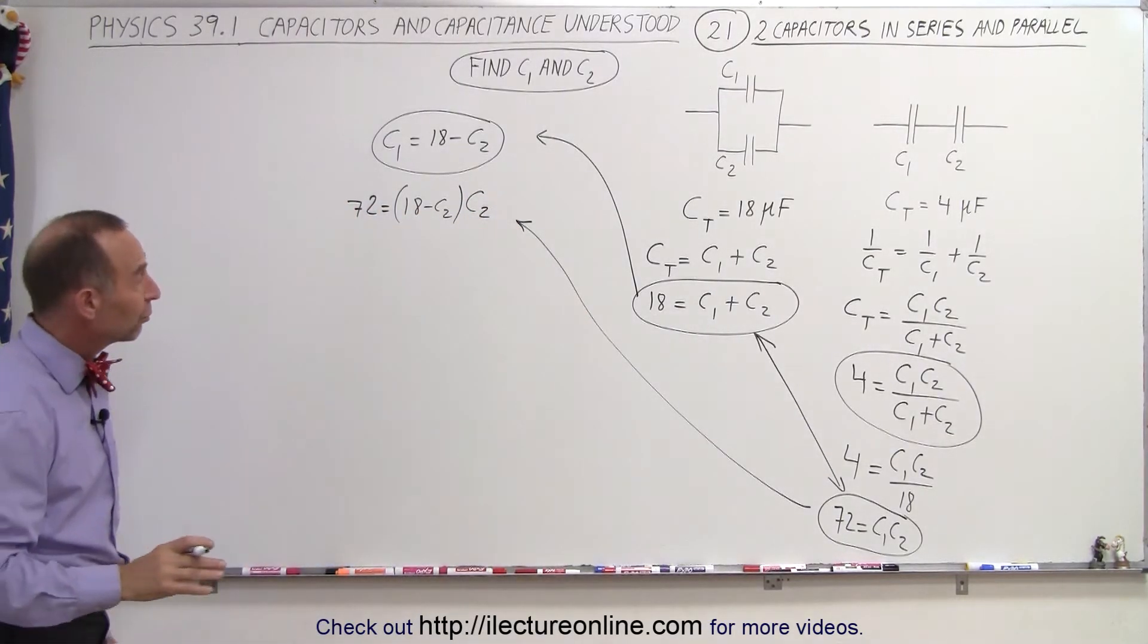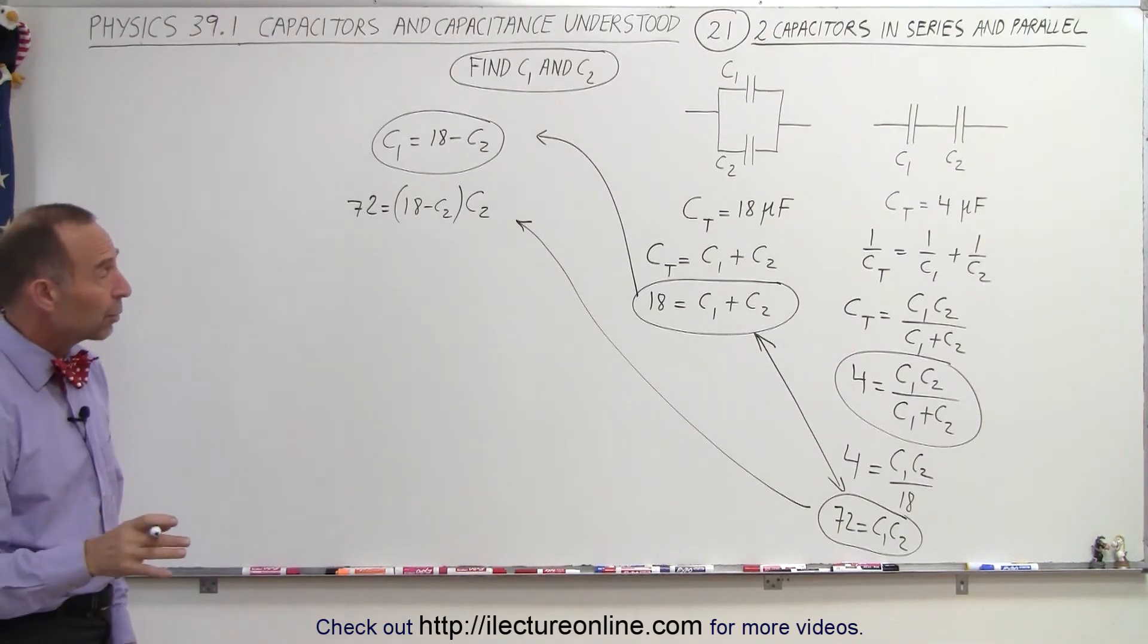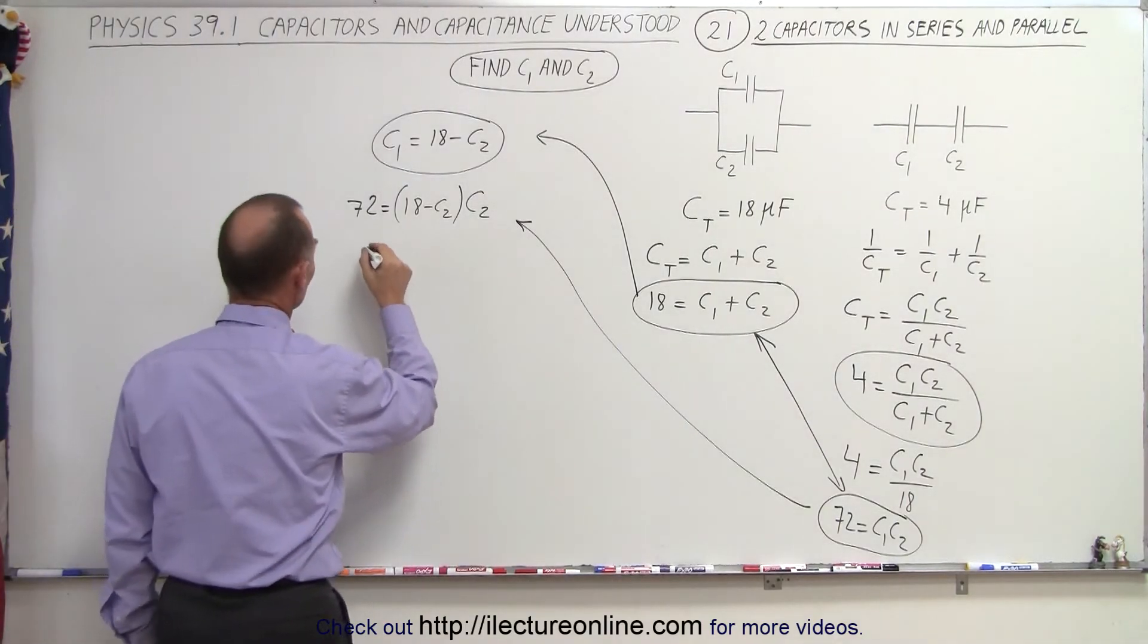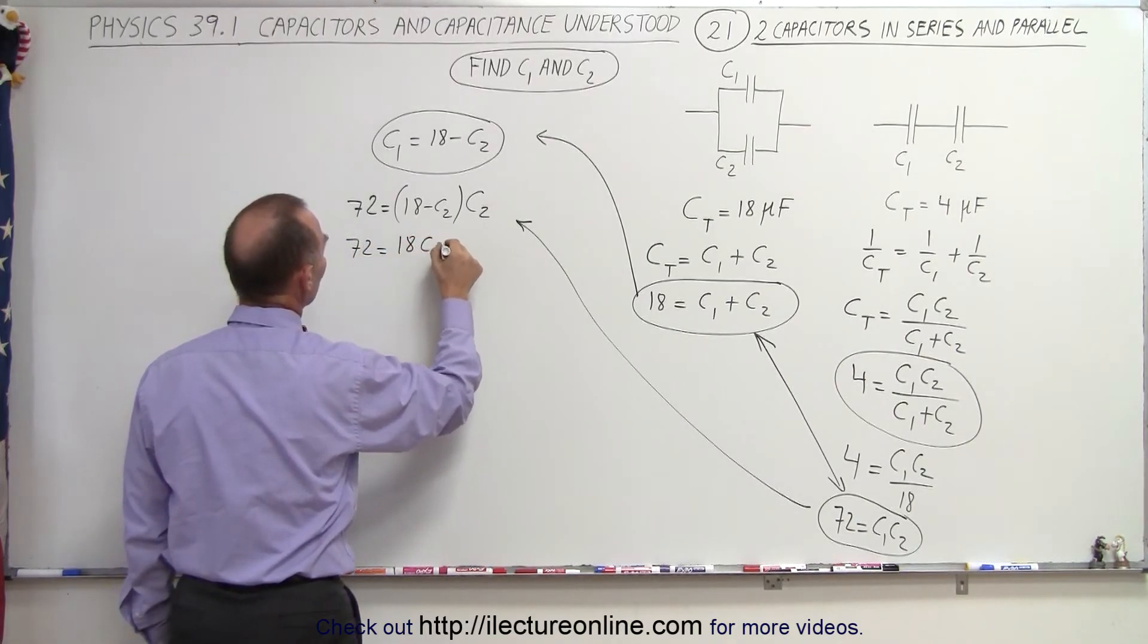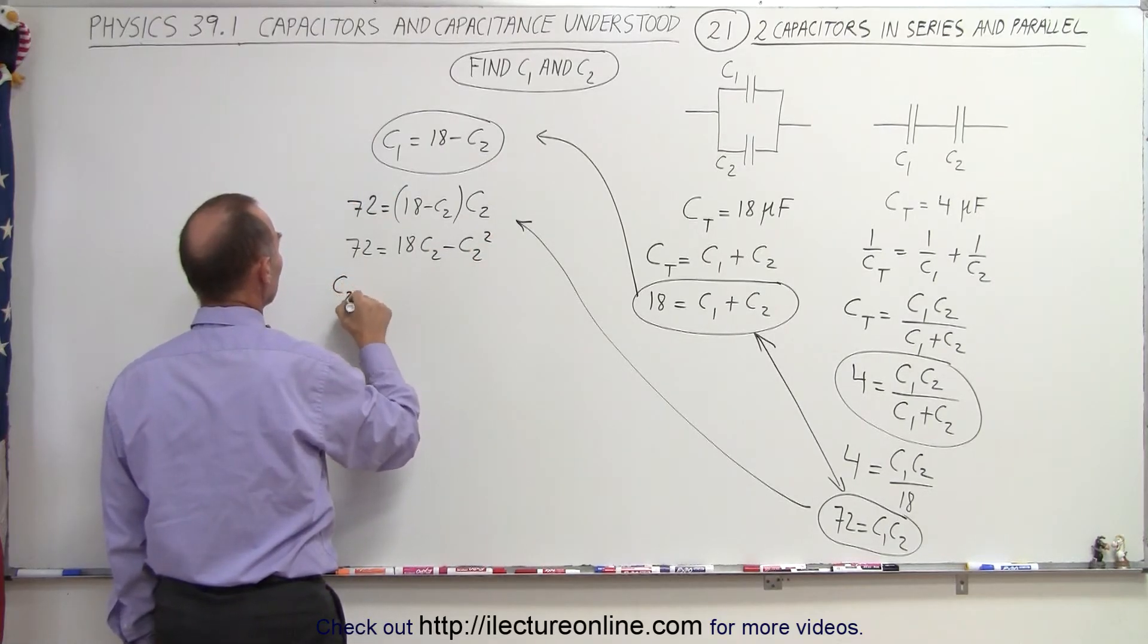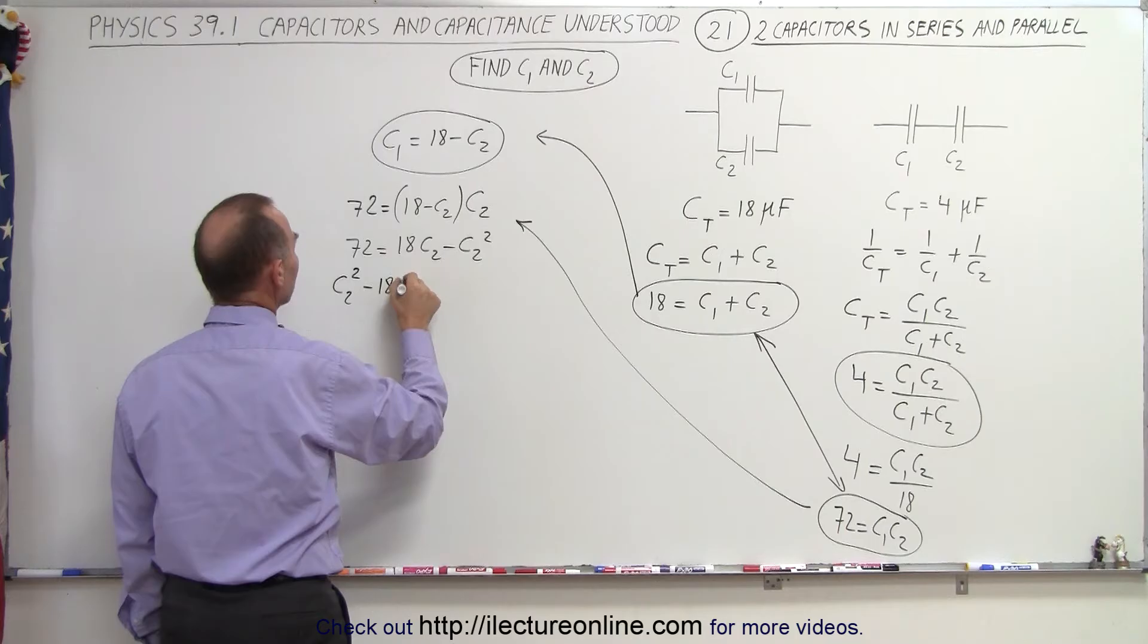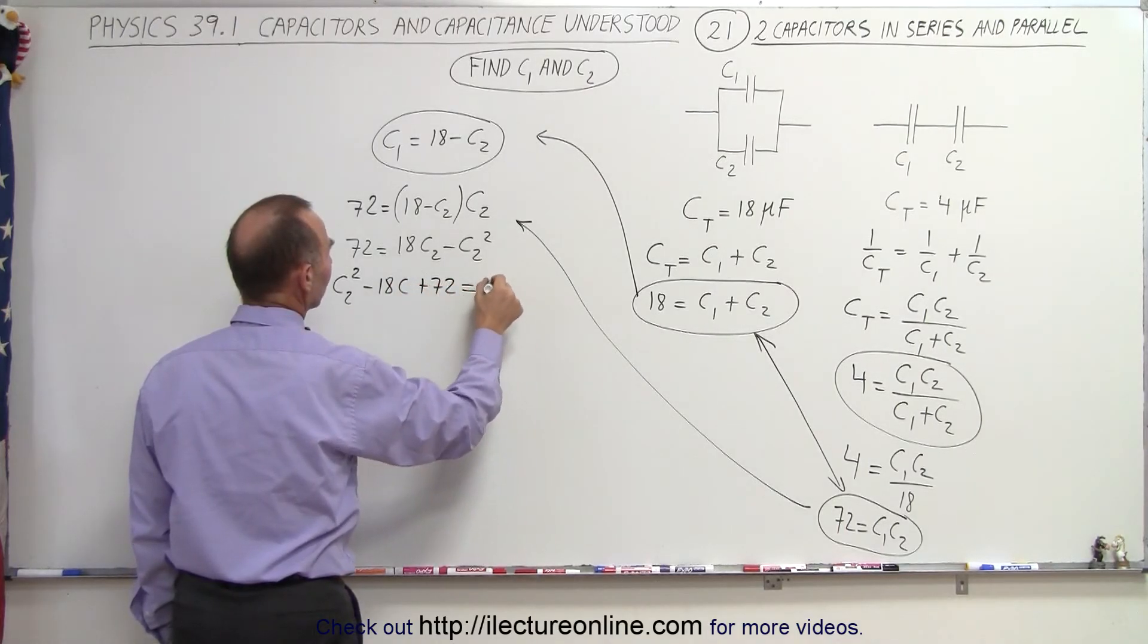And notice now we have an equation with only C2 in it. It looks like it's going to be a quadratic equation, but that's okay, we can solve those. So we end up with 72 is equal to 18C2 minus C2 squared. Moving everything over to one side, we have C2 squared minus 18C plus 72 is equal to 0.